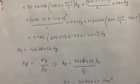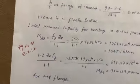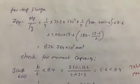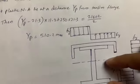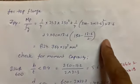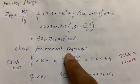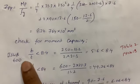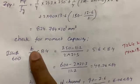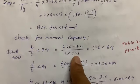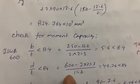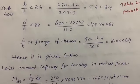The same plastic moment calculation is repeated for the top (compression) flange. To verify the section classification, Table 2 on page 18 is referenced for limiting width-to-thickness ratios. For ISWB 600: b/t = (250 − 11.2)/2 ÷ 21.3 = 5.6, which is less than 8.4 — satisfied. Also d/t is checked and found to be less than 84. Both conditions are satisfied, confirming it is a plastic section.